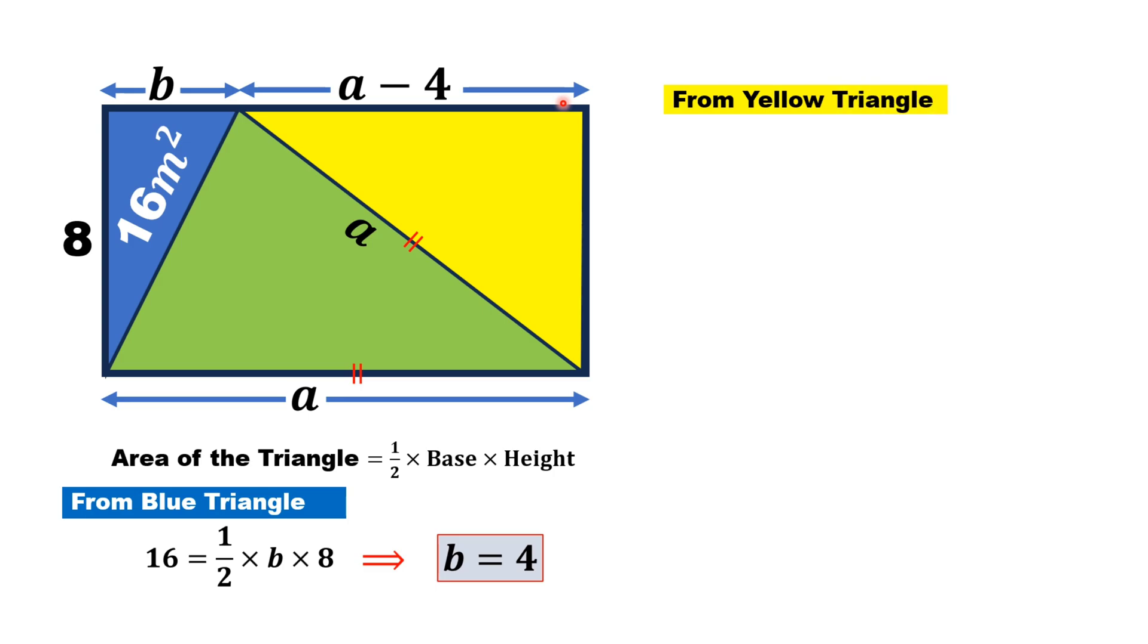Now, from the yellow triangle, which is again a right triangle, this side length is A minus 4. Its hypotenuse is A and this side length is 8.